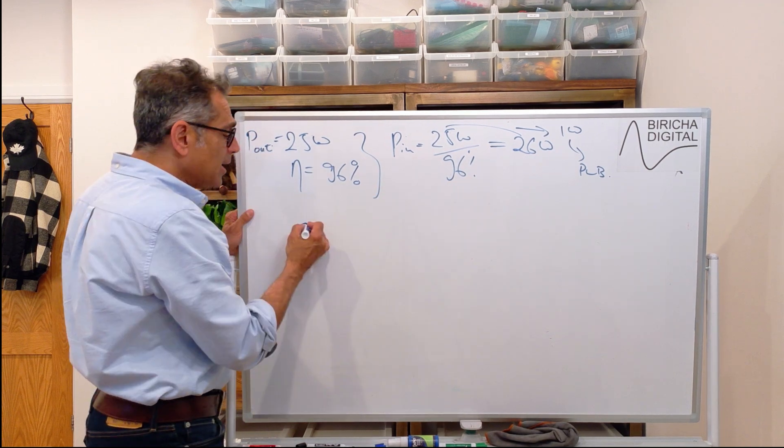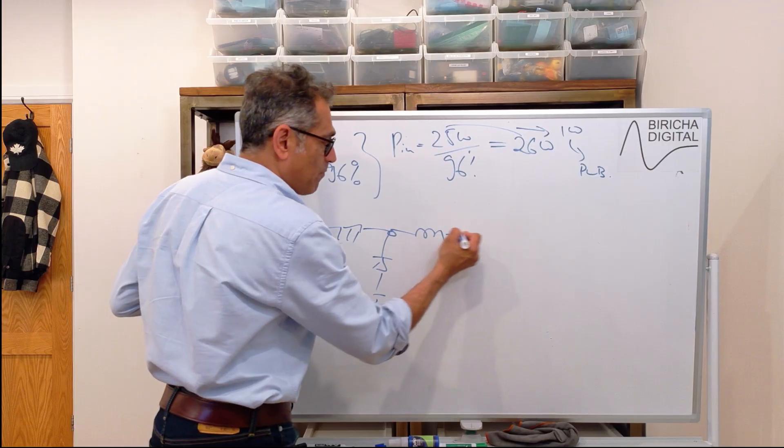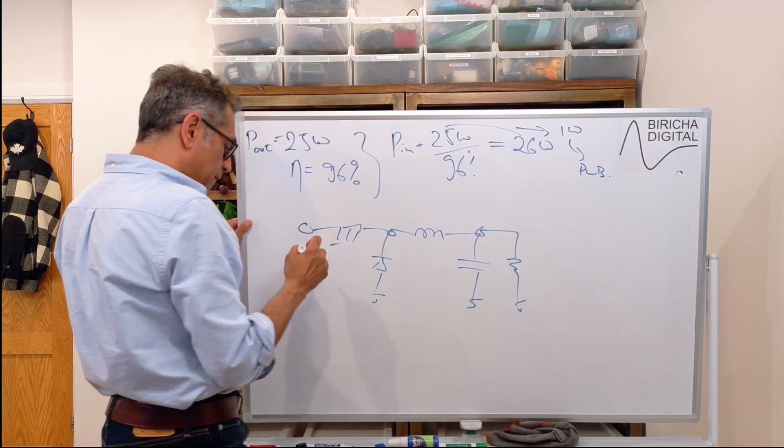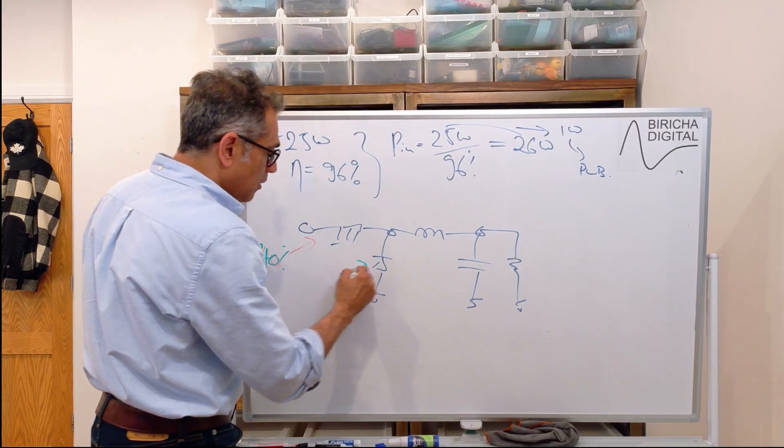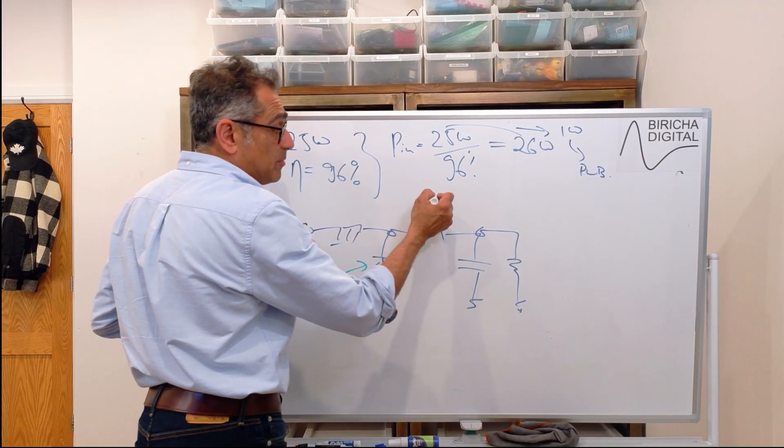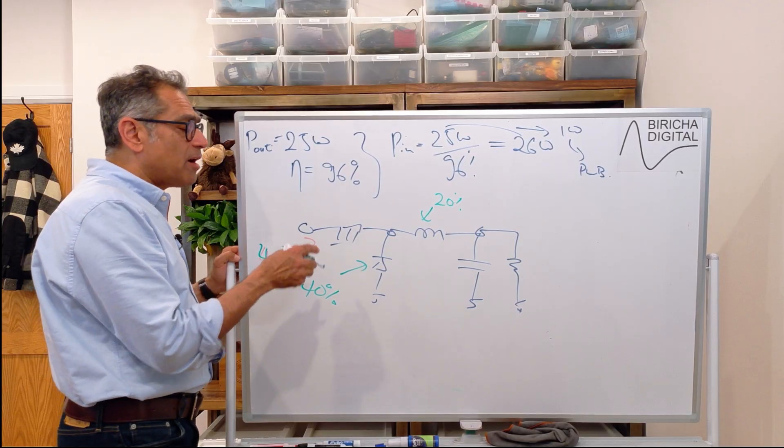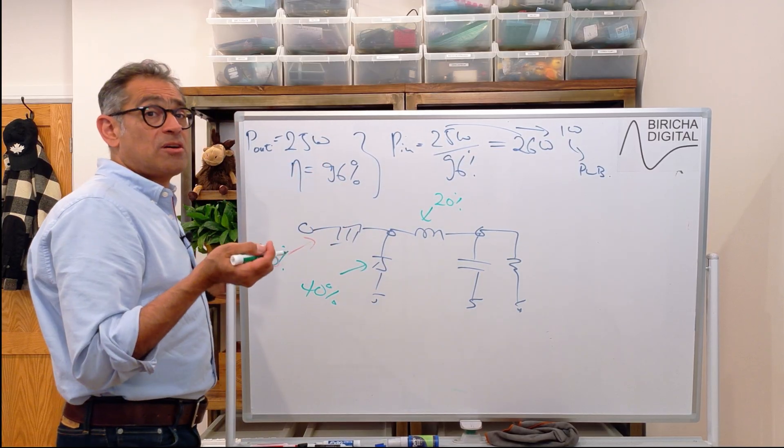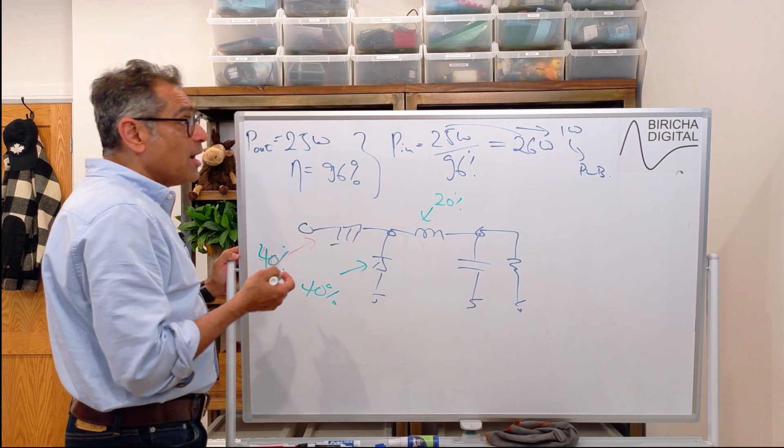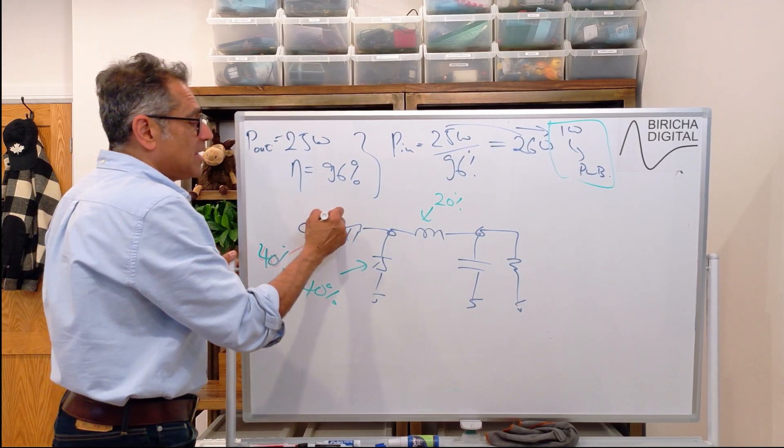But how do I divide this between the various components of my power supply? Let's say that we have a simple buck converter. A pragmatic way of dividing this up is to allow 40 percent for the top switch, 40 percent for the bottom switch, and the rest, in my case 20%, for the magnetics. If you're designing a flyback we usually divide them one third, one third, one third because the magnetic losses in a flyback is bigger than a buck.